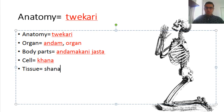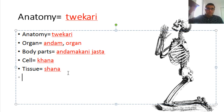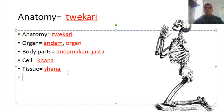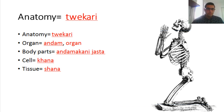Tissue is shana. There is another homophone for this word — it also means comb. But in the biological context, shana means tissue.